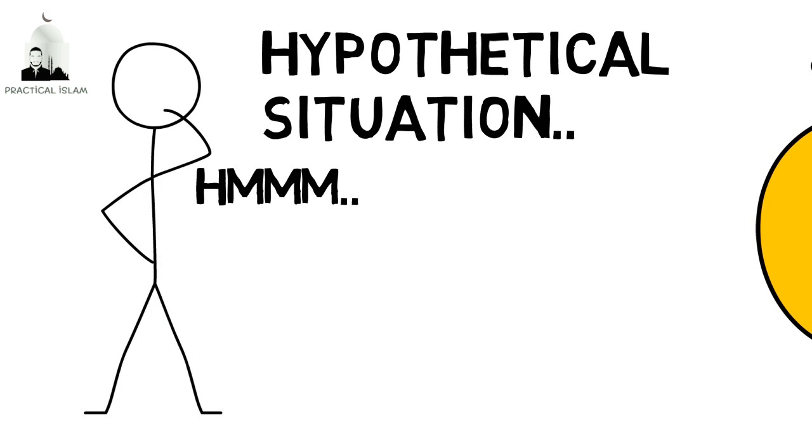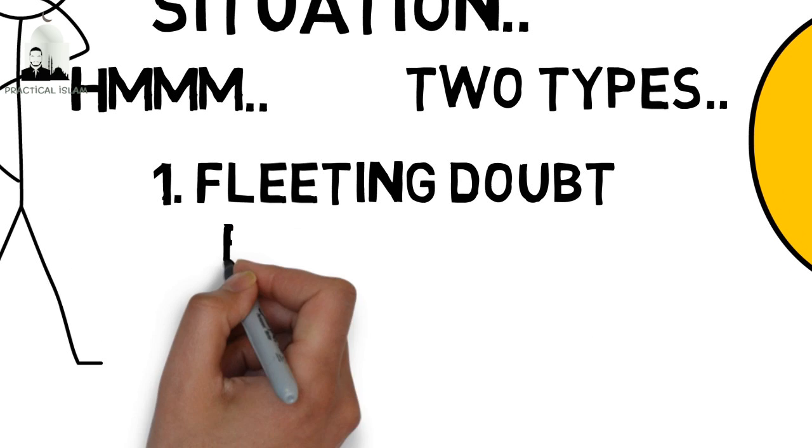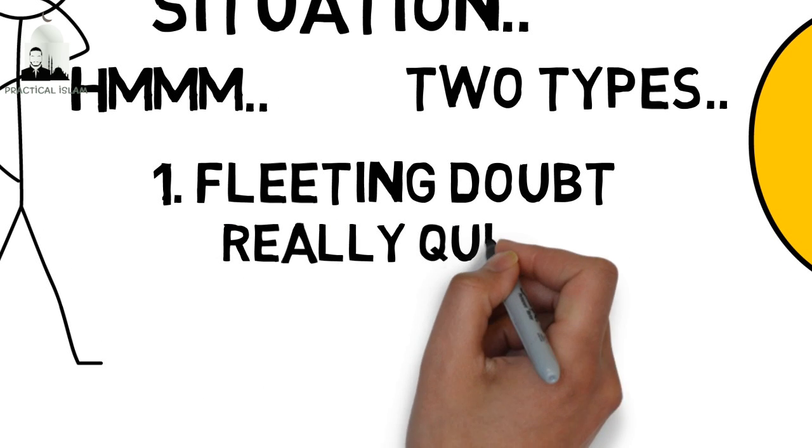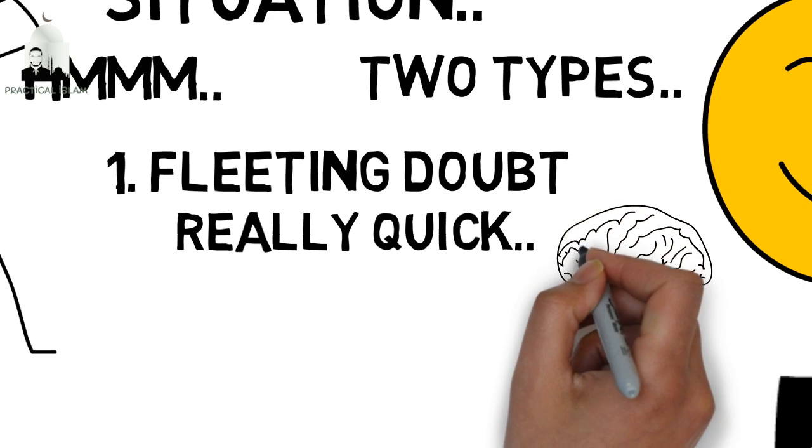Doubt is of two types. One is a fleeting doubt. A fleeting doubt, I mean, it's very quick. It comes to you and then you're like, no, don't be silly, that's ridiculous.